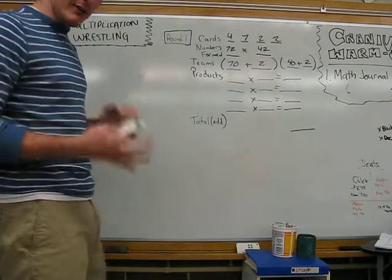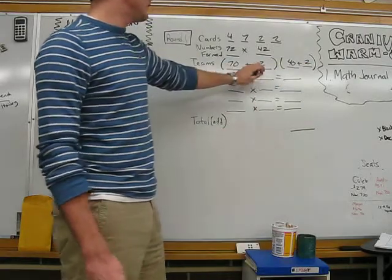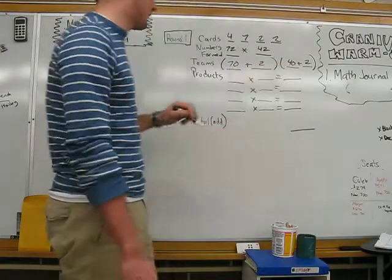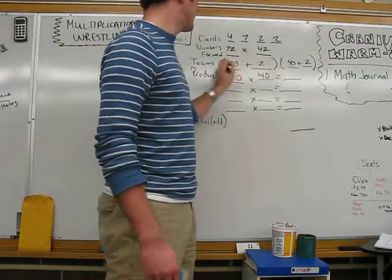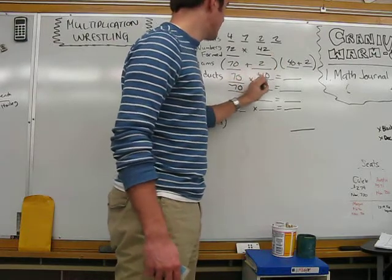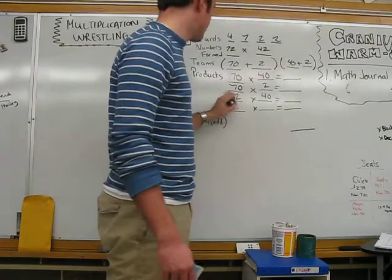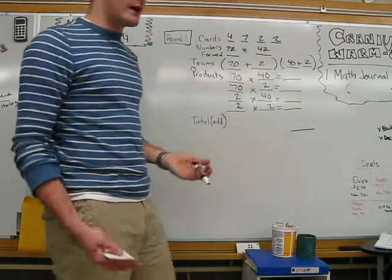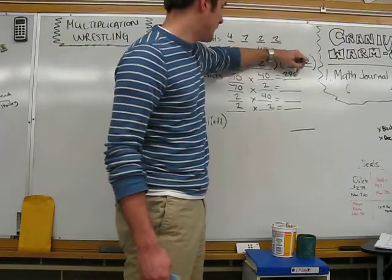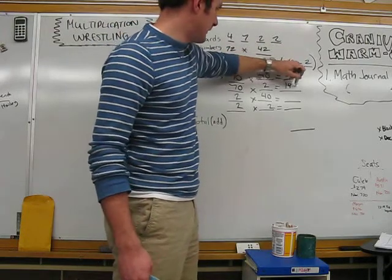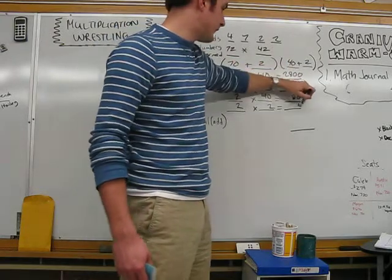Now, those two teams are going to wrestle against each other. So, we have seventy wrestling forty, seventy wrestling two, two wrestling forty, and two wrestling two. When we use our mental math strategies and our zeros tricks, this is a cinch. Seven times four is twenty-eight, add two zeros. Seven times two is fourteen, add a zero. Two times forty - well two times four is eight, add zero. Two times two is four.